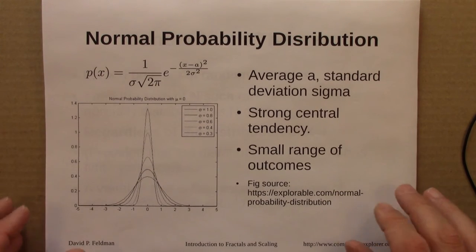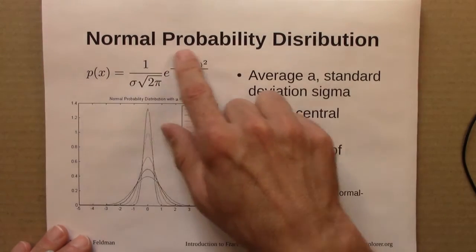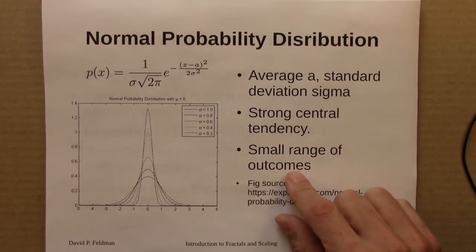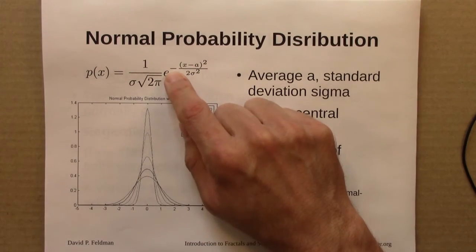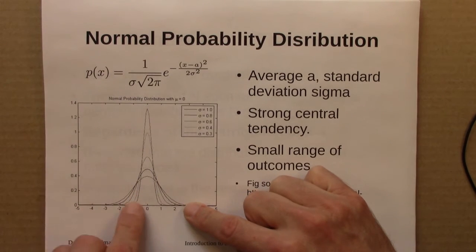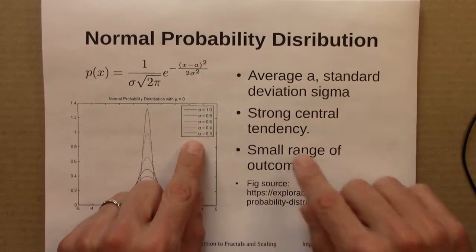So then I took a step back and said, I want to contrast power laws with other types of distributions that we see. And the most famous distribution, and one that's very different from power law, is the normal distribution. It's also known as the Gaussian distribution, or sometimes a bell curve. Here's the formula for it. And here are a bunch of different normal distributions plotted for different sigmas, for different standard deviations.